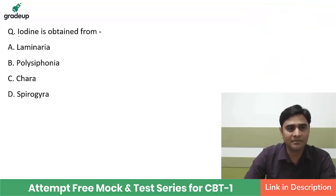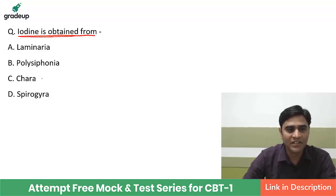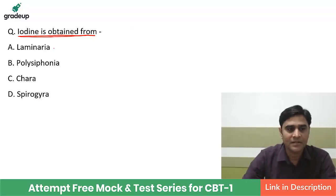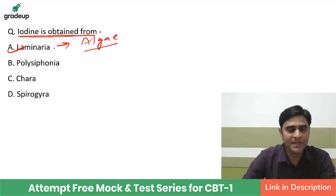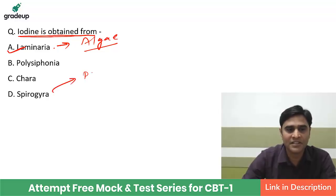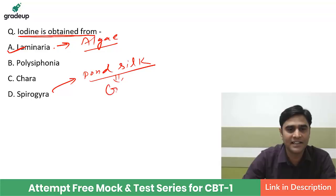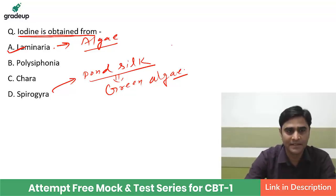Next question: Iodine is obtained from which of the following — laminaria, polysiphonia, chara, or spirogyra? These are all algae. The right answer is laminaria. Laminaria is an algae, and iodine is obtained from it. Also note that spirogyra is called pond silk — it is a green algae.